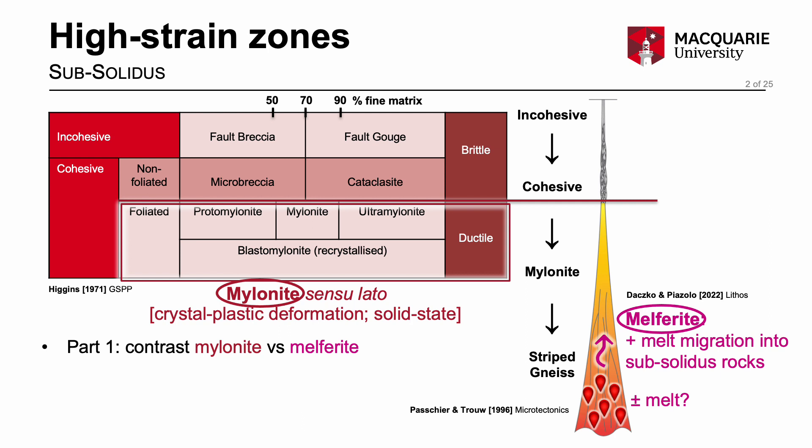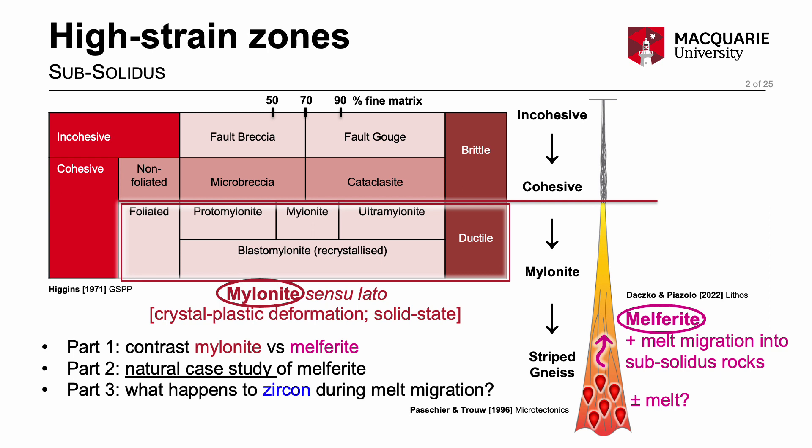For the first part of the presentation I'll contrast mylonite versus melphorite. Then I'll present a natural case study of melphorite in lower arc crust from New Zealand and finish with showing you what happens to zircon in the rocks as melt migrates through and reacts within these high strain zones.